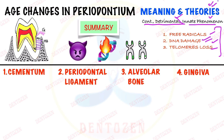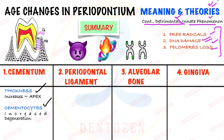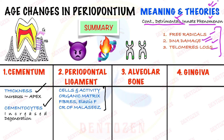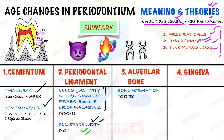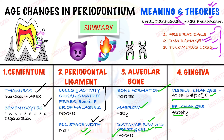Now the summary of age changes in periodontium. In cementum: increase in thickness especially at the apical region, and decreased number of cementocytes. In periodontal ligament: everything is decreasing — cells, organic matrix, fibers, elastic fibers, and cell rests of Malassez — and the PDL space width generally decreases. In alveolar bone: bone formation decreases, marrow becomes fatty, and the distance between alveolar crest and cementoenamel junction increases. In gingiva: apical shift of junctional epithelium, epithelium becomes atrophic, and collagen fibers in connective tissue decrease.